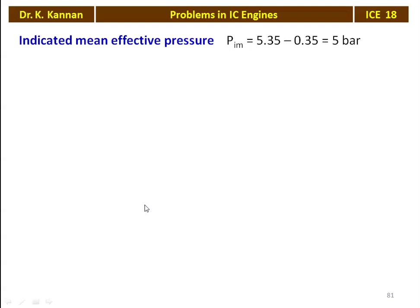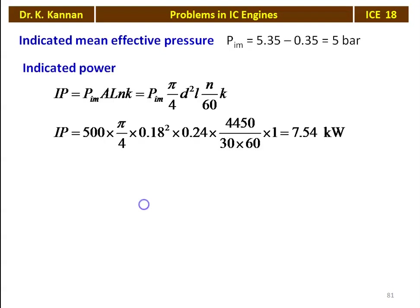First we calculate the net indicated mean pressure: P_im = 5.35 − 0.35 = 5 bar. We calculate the indicated power IP = P_im × (π/4) × d² × L × n/60 × K. Substituting numerical values: 500 kPa × (π/4) × 0.18² × 0.24 × (4450 / (30 × 60)) × 1 = 7.54 kW.